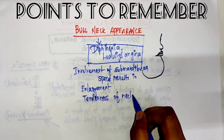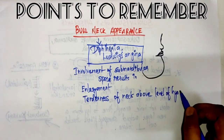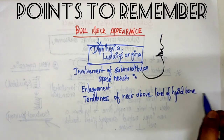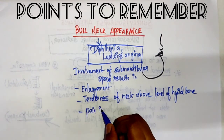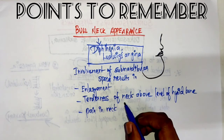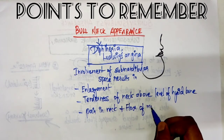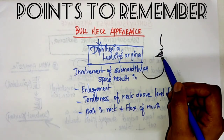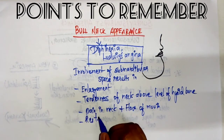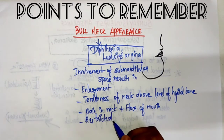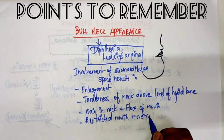Because of this enlargement, there will be tenderness of the neck above the level of the hyoid bone. There will also be pain in the neck and pain in the floor of the mouth, because the floor of the mouth is also involved. Additionally, there will be restricted mouth opening due to the large inflammation or enlargement — difficulty in moving your mouth.